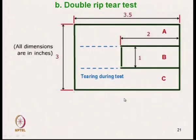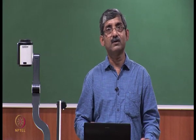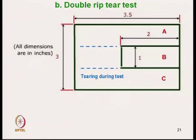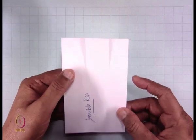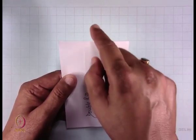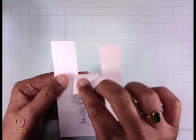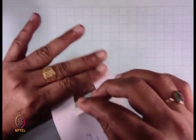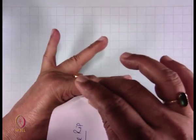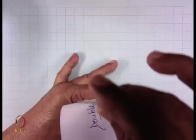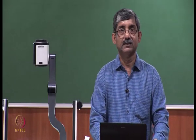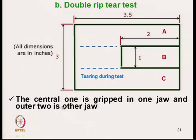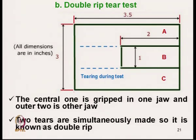Another method similar to single ribbed tear strength is called double ribbed tear strength. Instead of a single cut, two cut marks are made. The middle portion is put in one jaw and the two outer portions in the other jaw. Two tears are simultaneously made — hence it is known as double ribbed tear strength.